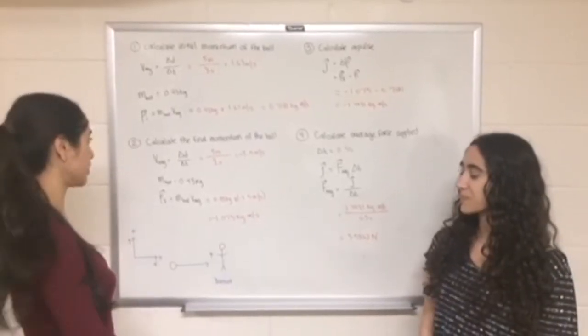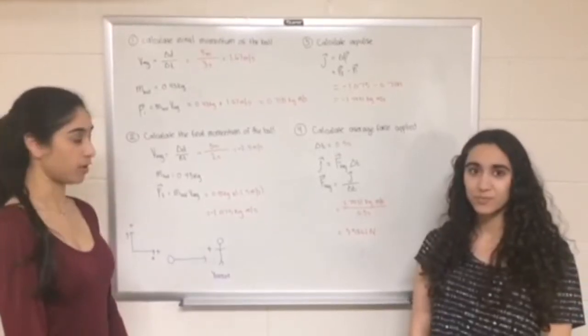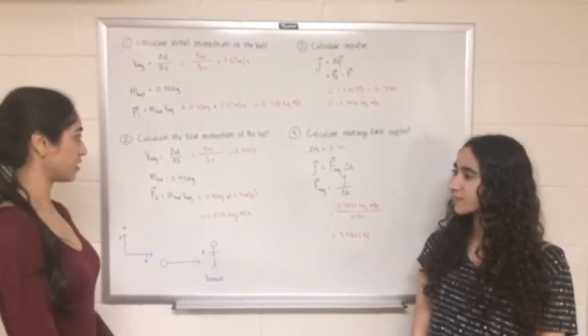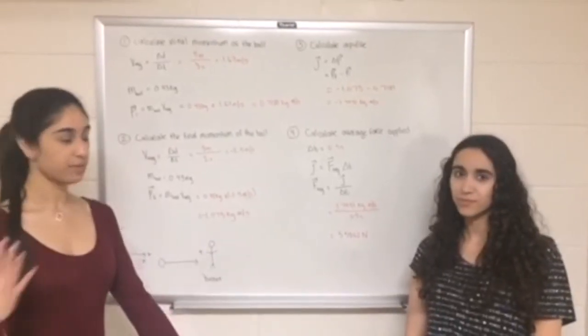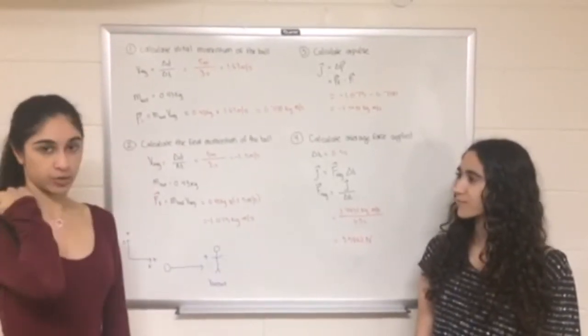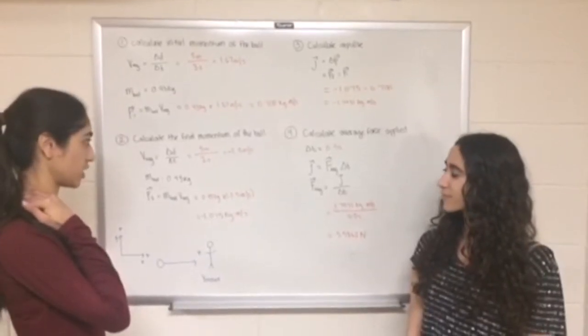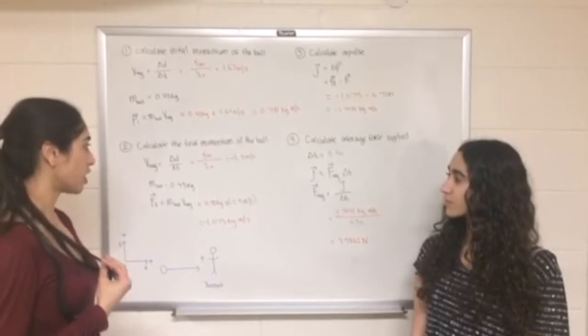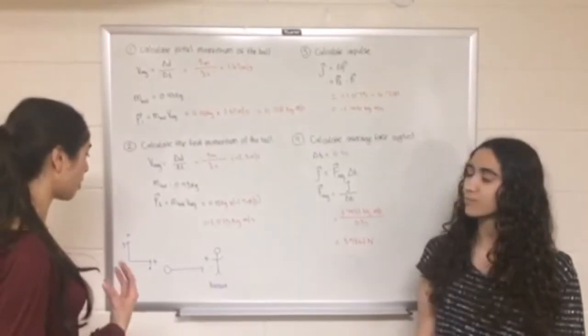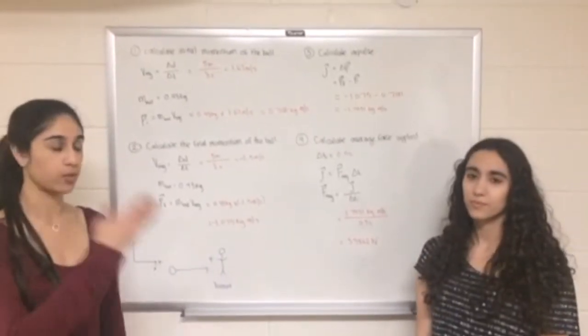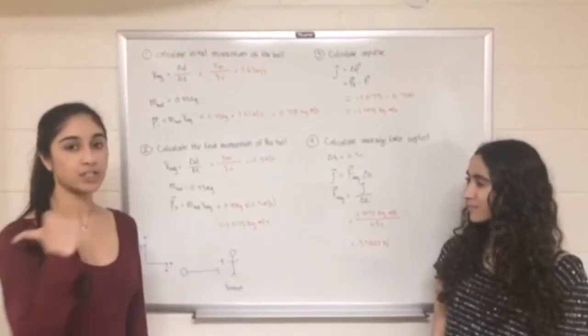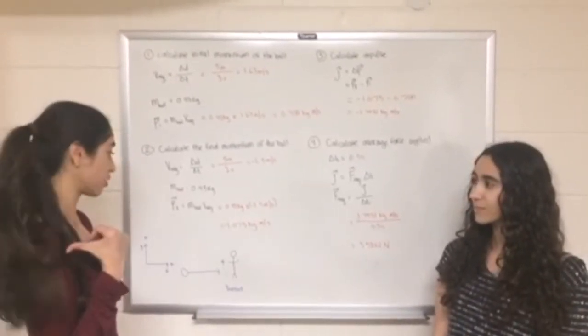The second step that we took was to calculate the final momentum of the ball. So to do so, we had to calculate the average velocity that the ball took to get there. That was the distance of 5 meters over 2 seconds, which gave us a velocity of minus 2.5 meters per second. The reason why the velocity is negative is because the ball going towards you south, we have chosen this to be the positive direction, so the ball going back to the initial position is going to be negative.